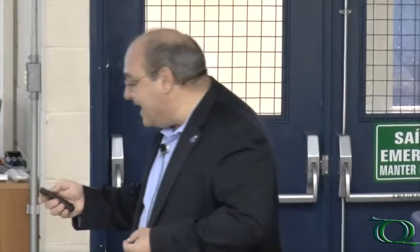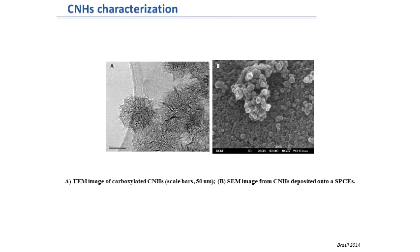These carboxylated groups, which are much larger than with other preparation methods, can be used for the covalent attachment of biomolecules. Transmission electron microscopy images show the dahlia-like spherical structures with a diameter of approximately 120 nanometers. When deposited onto screen-printed carbon electrodes, the spherical structure is maintained at around 130 nanometers, confirming that the deposition process did not affect the morphology of the pristine carbon nanohorns.